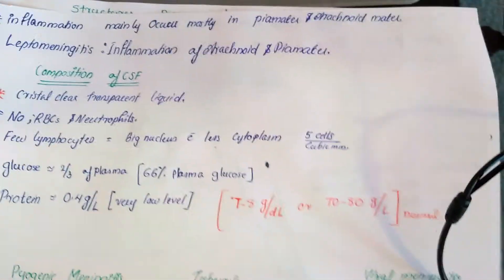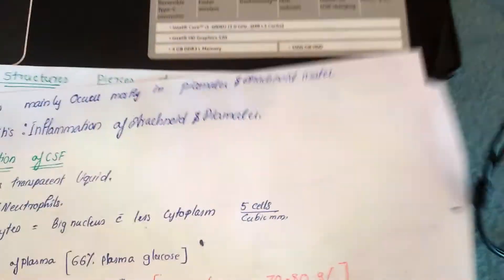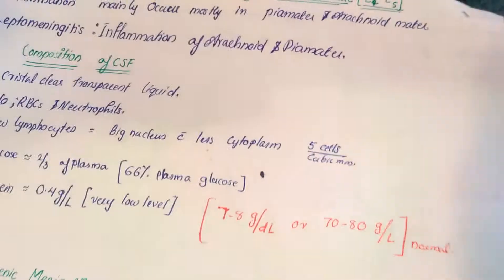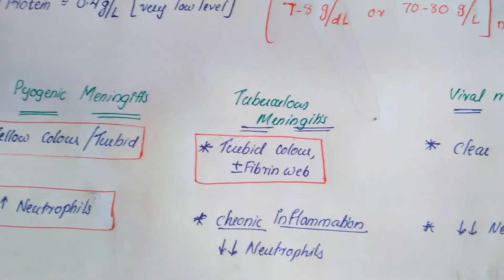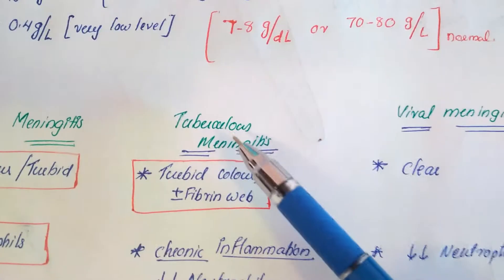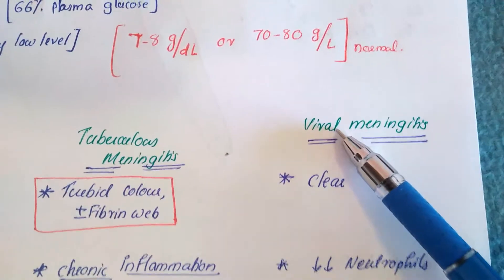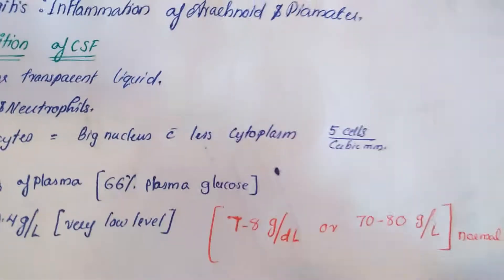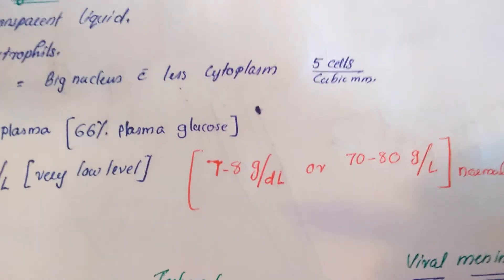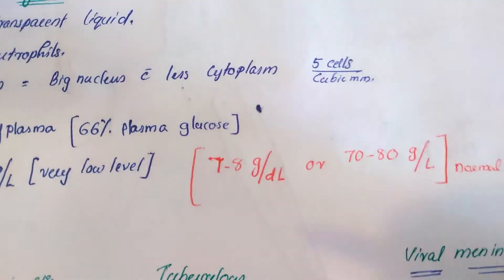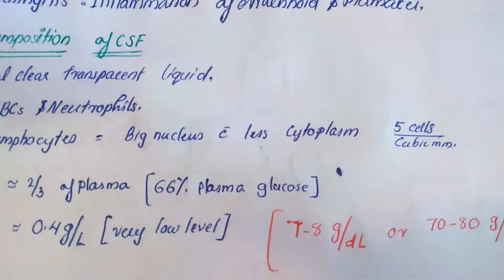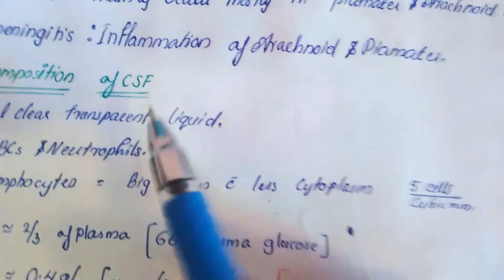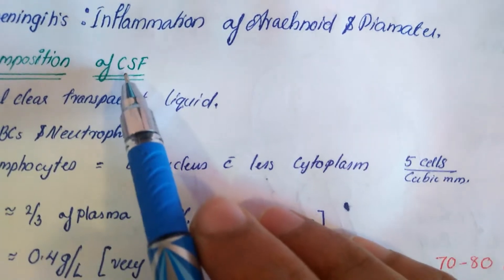Hi friends, welcome to Interactive Medicine. In this section we will talk about how to differentiate between pyogenic meningitis, tuberculosis meningitis, and viral meningitis. Before we differentiate these meningitis types, we need to understand the normal composition of CSF — cerebrospinal fluid.